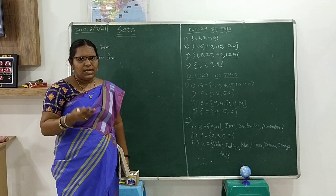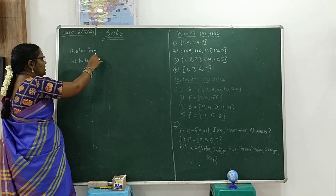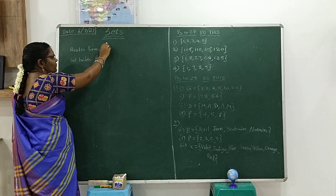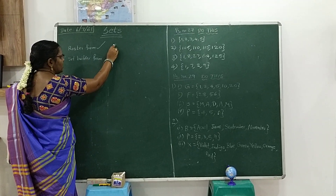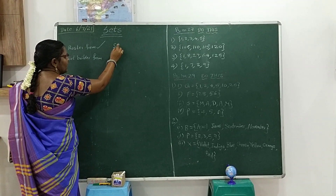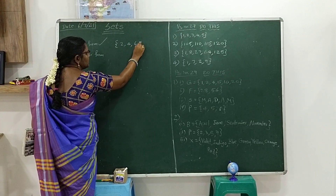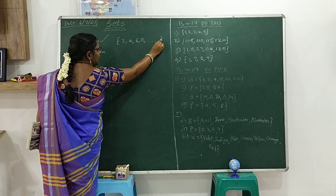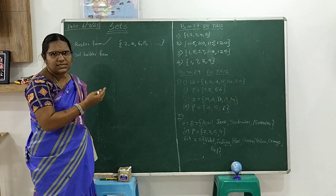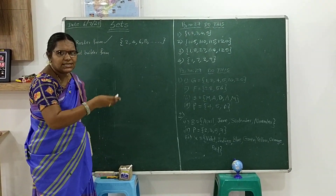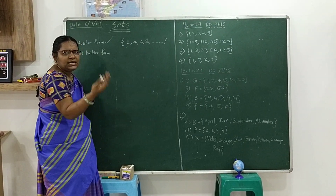That topic is forms of a set. The first one is roster form. Roster form means the set where we write the elements directly, separated by commas — whatever the elements are, we write them as they are, separated with commas.